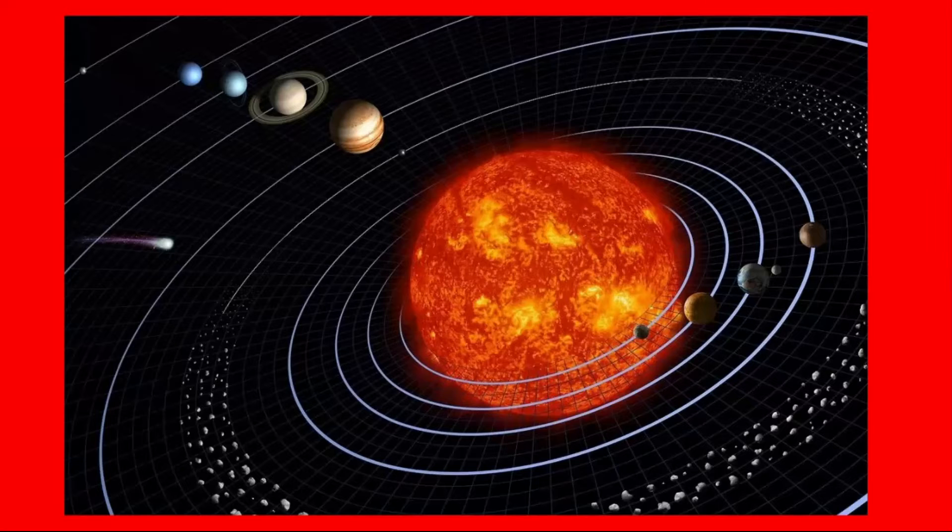The sun is a star and is the center of the solar system. A star is a huge sphere of hot gases. We receive light and heat from the sun.